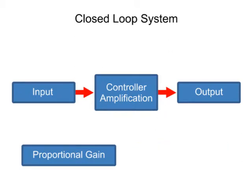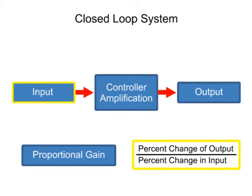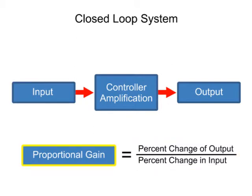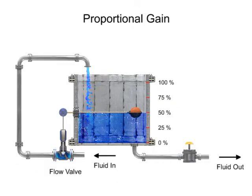The ratio of the change in output to the change in input is defined as proportional gain. To illustrate the concept of gain, a common process of regulating the level of fluid in a tank with a float attached to a control valve is used.